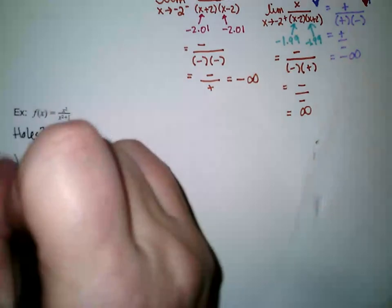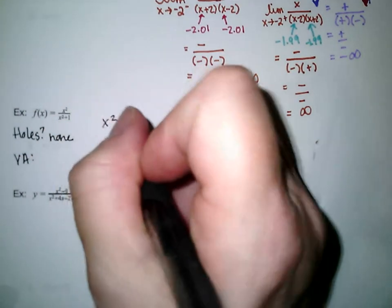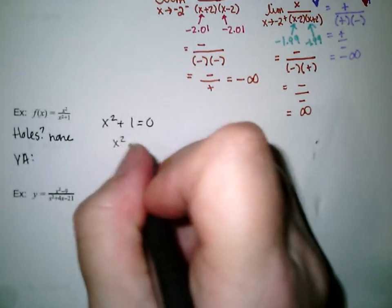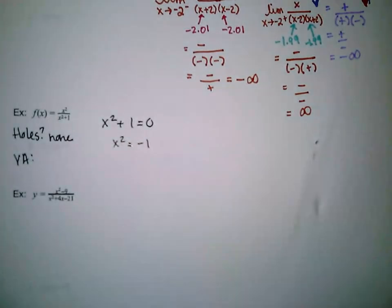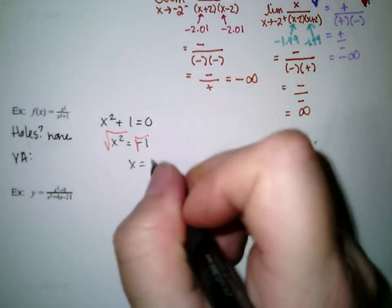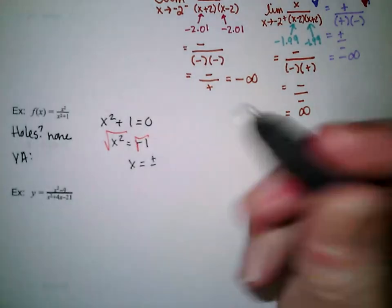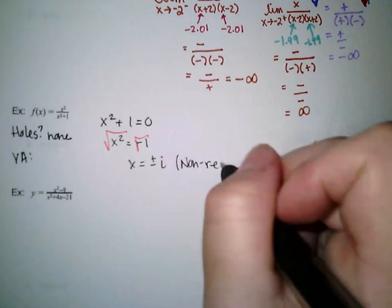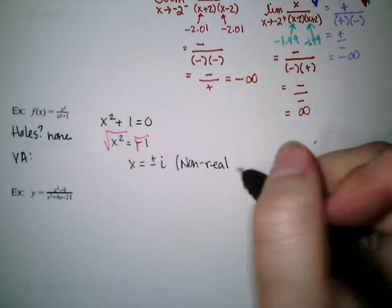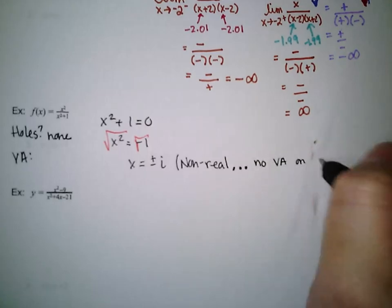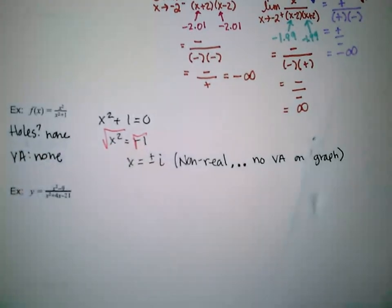Now let's look at vertical asymptotes. We set the denominator equal to zero. Moving the 1 over gives x squared equals negative 1. Taking the square root of both sides, x equals plus or minus the square root of negative 1, which is i — a non-real number. Since we graph over the real numbers in our coordinate plane, there is no vertical asymptote on our graph.